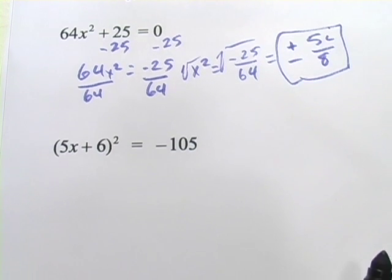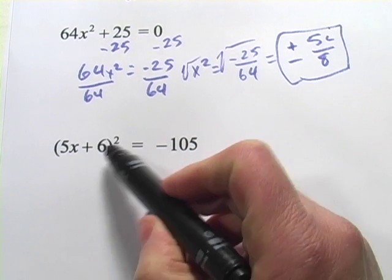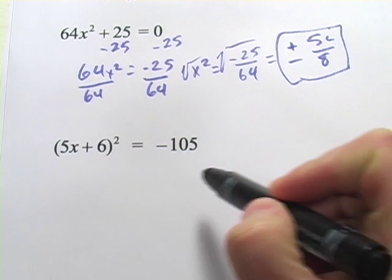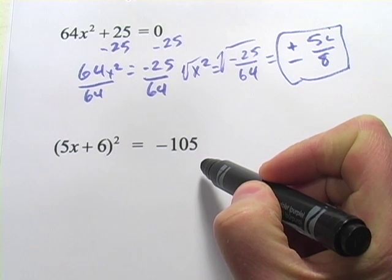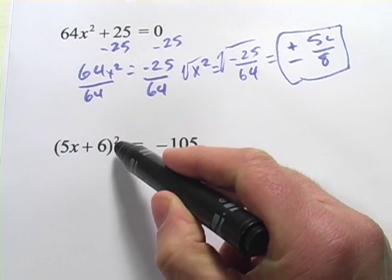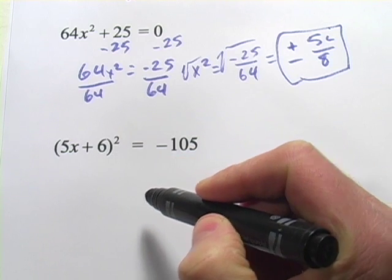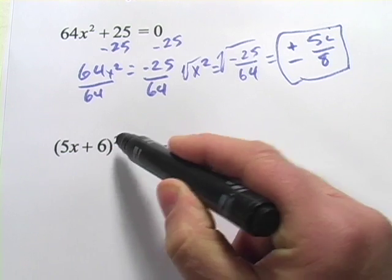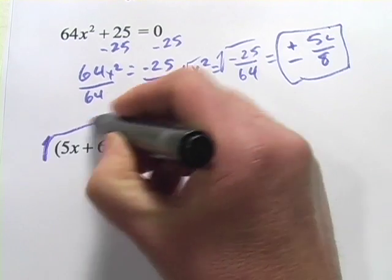All right, let's try one that's just slightly trickier. We've got a quantity squared, 5x plus 6 quantity squared equals negative 105. We don't need to do anything else to the left before we take our square root, because we have everything inside the quantity squared. So we're going to take a square root right now.